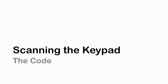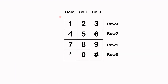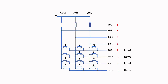Let's take a look at how we can scan for a key press. I will number the keys on the keypad according to this diagram, as per EdSim 51. This would be Row 0, Row 1, Row 2, Row 3, and this would be Column 0, Column 1, and Column 2.